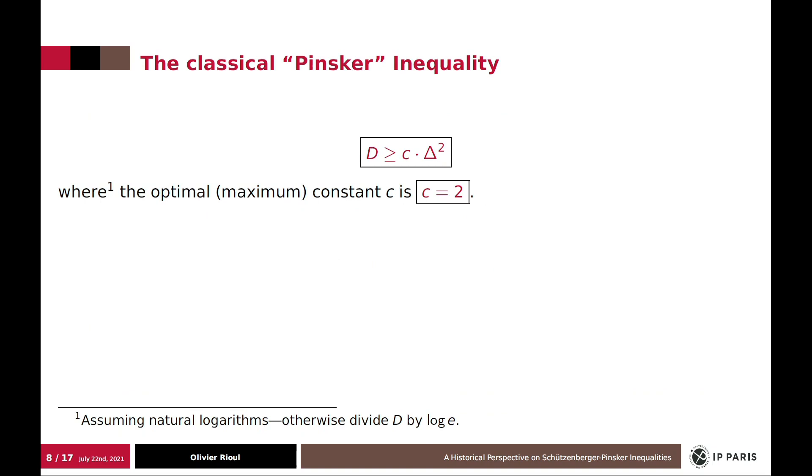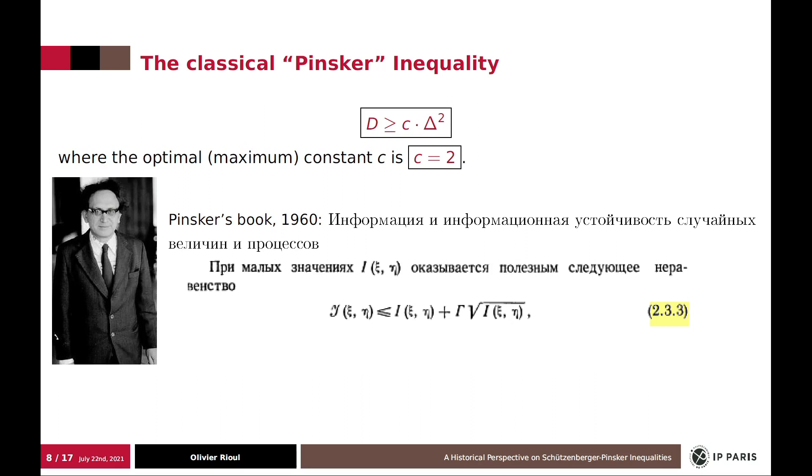The classical Pinsker inequality takes this form: D not less than c times the squared of delta, with some constant c, the best constant being c equals 2 that we know already. And this comes from Pinsker, Pinsker inequality. But in Pinsker's book, as you can see in Russian, it took this special form.